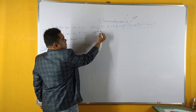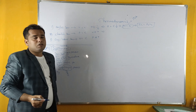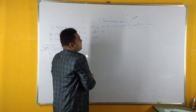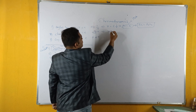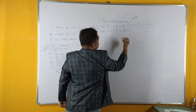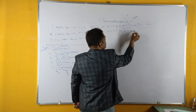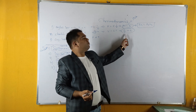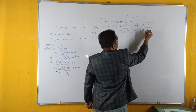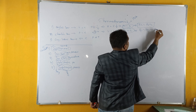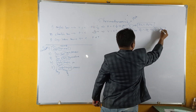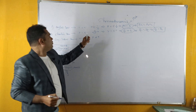Next, coming to Charles' law: it states that V is directly proportional to T. To remove the proportionality, we use constant C, giving V equals C times T, which implies V/T equals constant. For a process between two states, this becomes V1/T1 equals V2/T2, which implies V1/V2 equals T1/T2. This is the basic relation from Charles' law for a process.